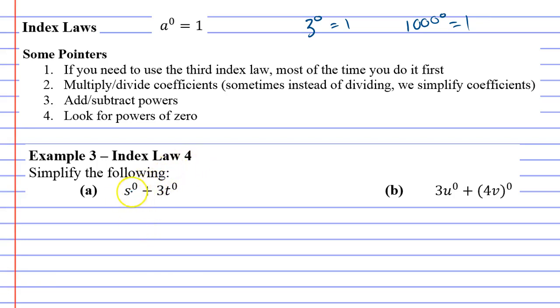So we'll start with question A. You'll notice that s to the power of 0, that is 1. And we have to be a little careful when we look at the next part because this is 3 times t to the power of 0. Whenever you see a pro-numeral and a number next to each other, there's actually times between it. So this is 3 times t to the power of 0. And the reason I've done this is because only the t turns into 1, not the 3. So this becomes 3 times 1. And when you do work this out, you'll actually get 4.